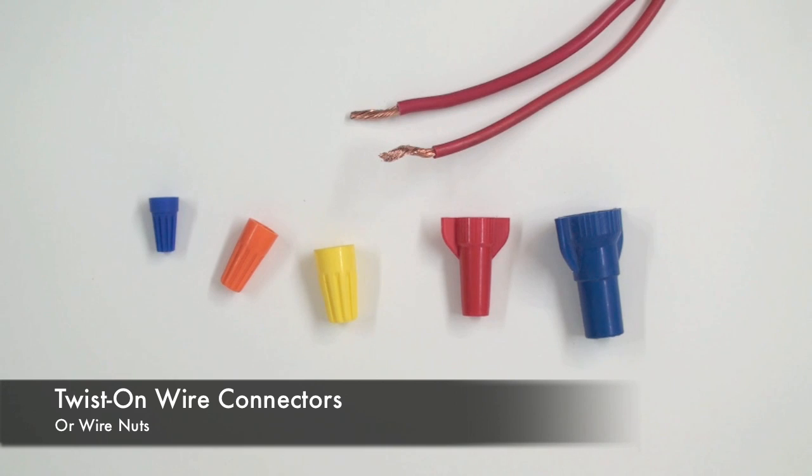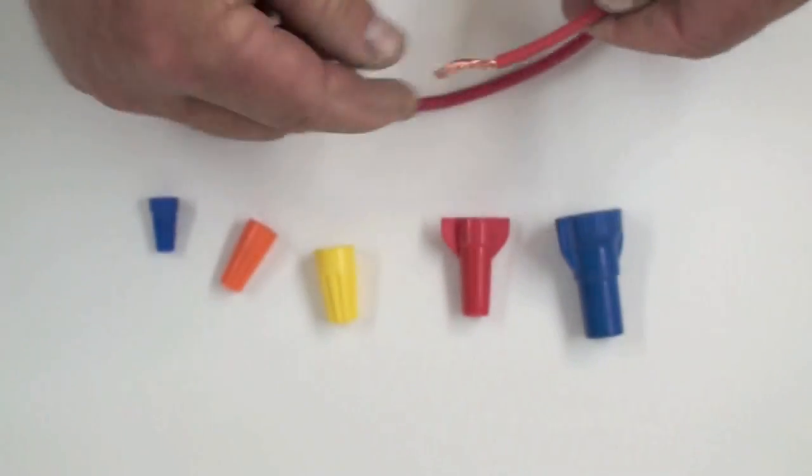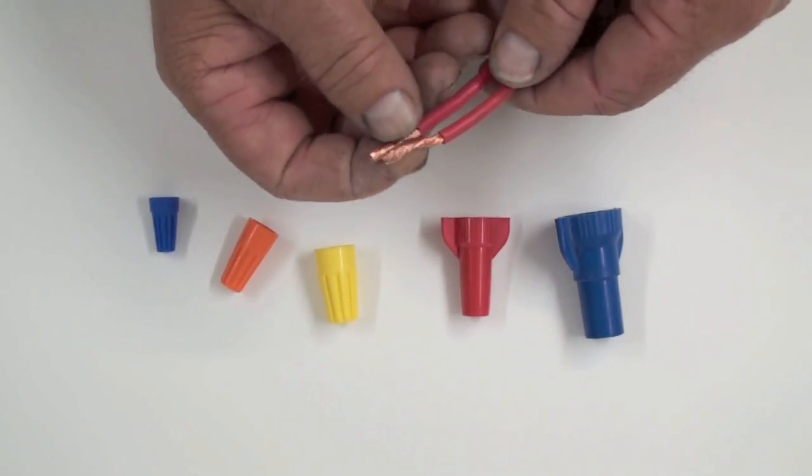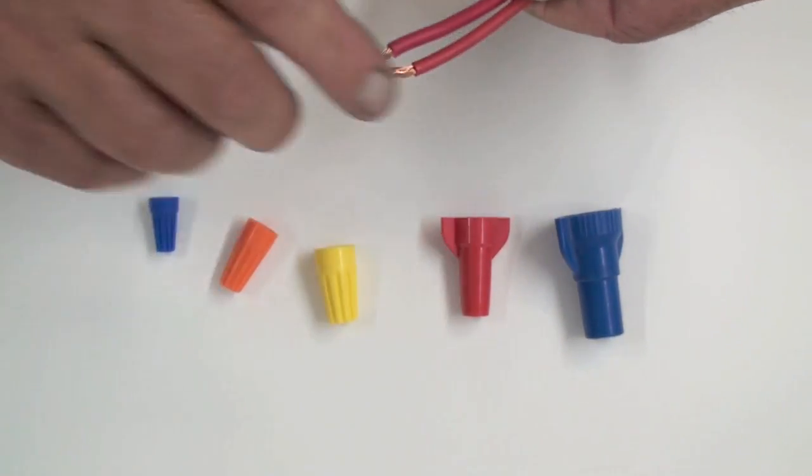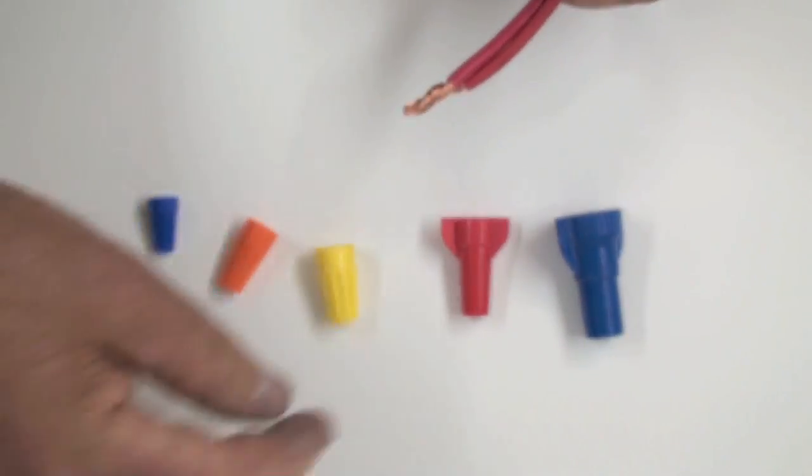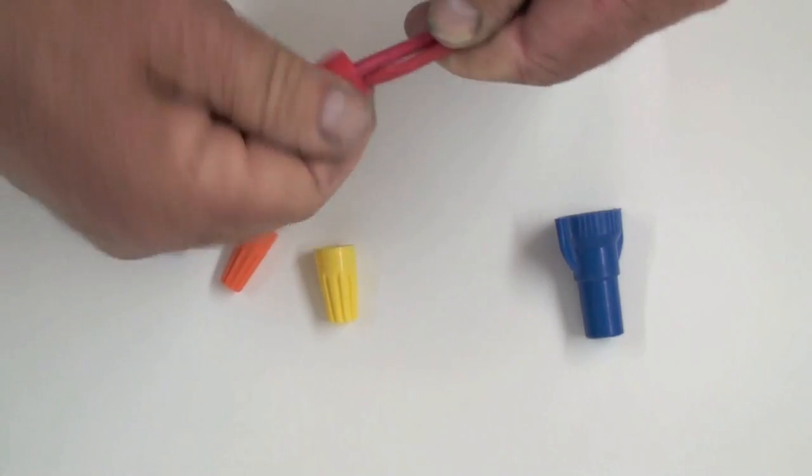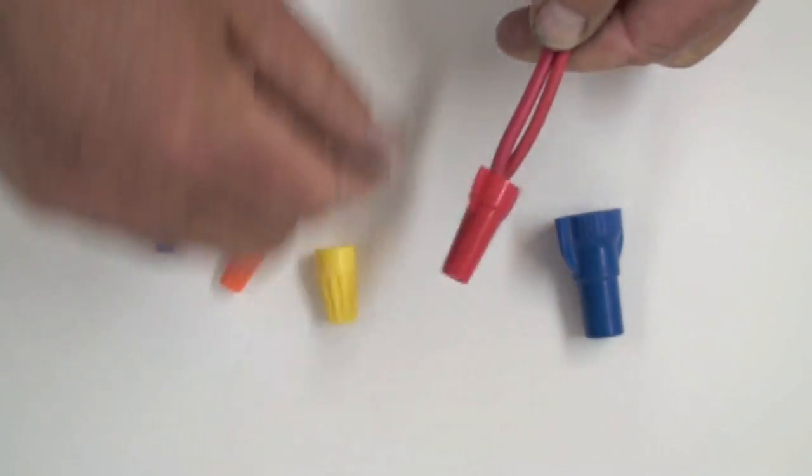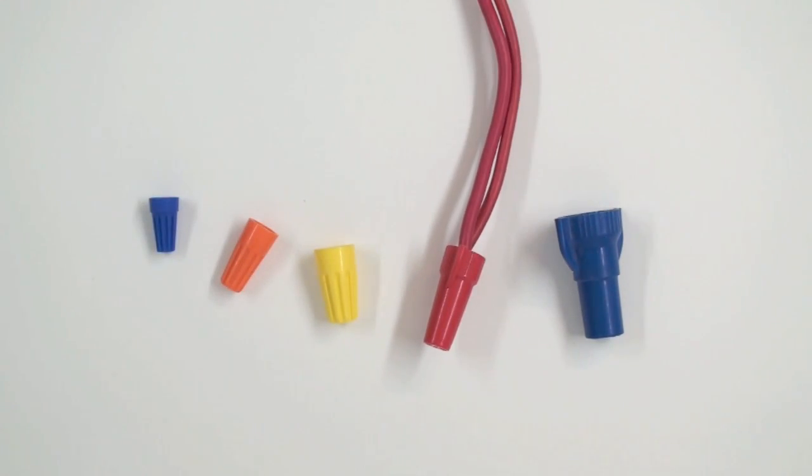These are wire nuts or twist-on wire connectors, and they come in a different range of sizes and colors. The colors are color coded for the different gauges of wire. To use these, you simply remove some insulation from your wires. This is 10 gauge wire, so I would select the appropriate wire nut, in this case a red or yellow, and it makes a great temporary connection or semi-permanent connection.